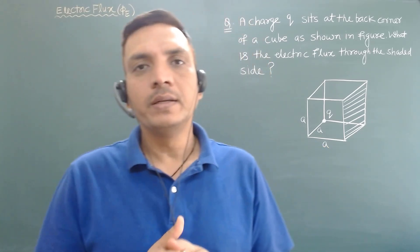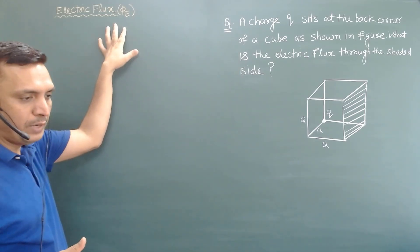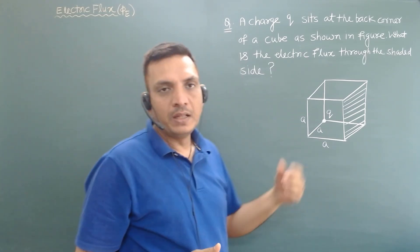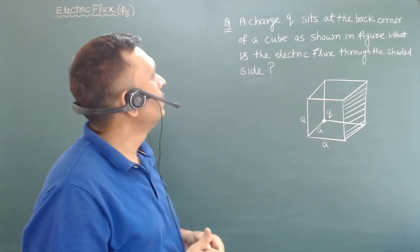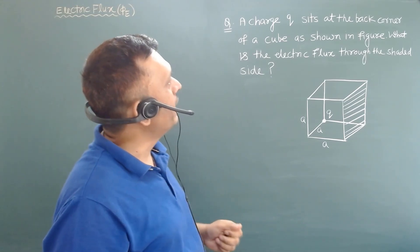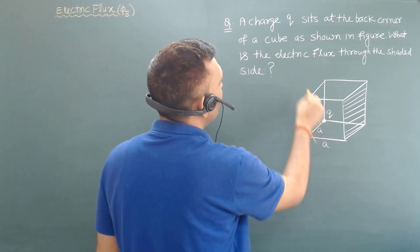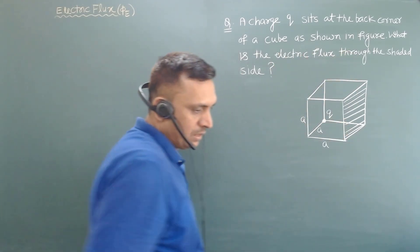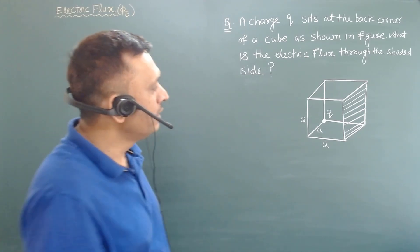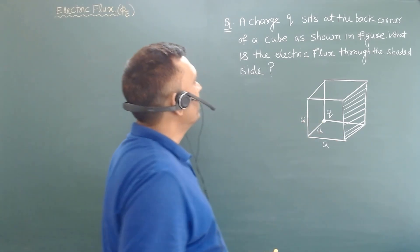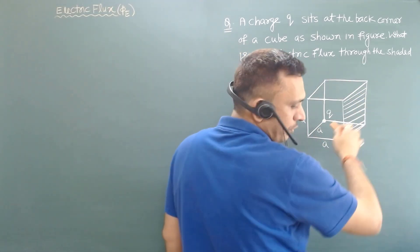Hello everyone. In this video I will discuss the concept of electric flux by taking a particular question. In this question, a charged cube sits at the back corner of a cube as shown in the figure. The side of the cube is A, and the charge q is placed at the corner. We have to find the electric flux through the shaded side of the cube.